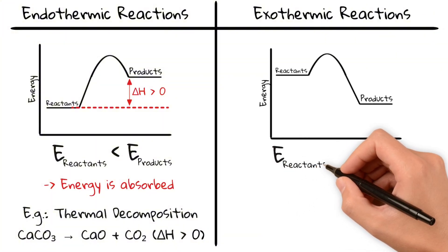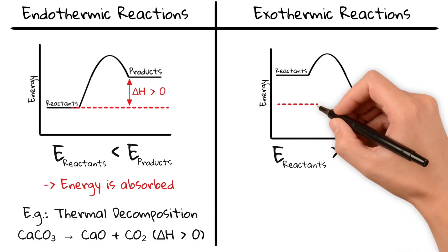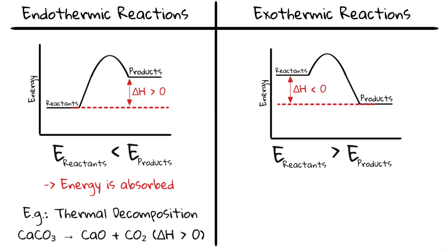If, however, less energy is needed to break the bonds than is released when bonds form, delta H is negative. Energy is released into the surroundings as heat or light. This is called an exothermic reaction.